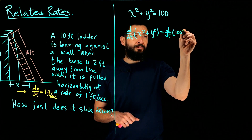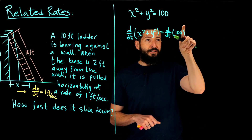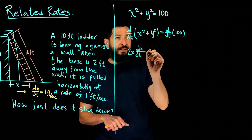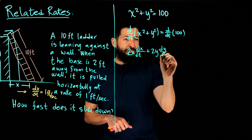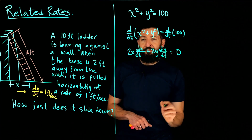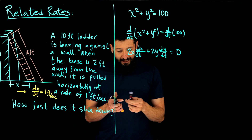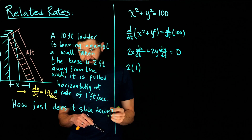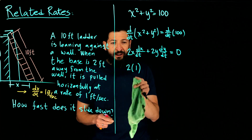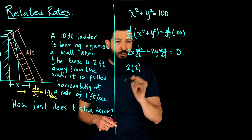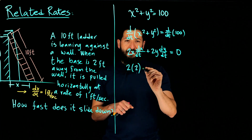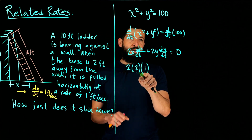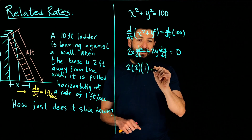Taking the derivative of both sides with respect to time: 2x·(dx/dt) + 2y·(dy/dt) = 0. A very common mistake is to write 100 on the right side instead of 0 — remember, the derivative of a constant is zero. Now we plug in: x = 2 feet (the base is 2 feet from the wall), and dx/dt = 1 foot per second.